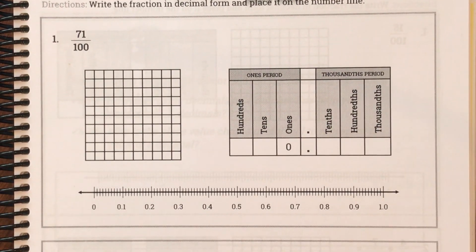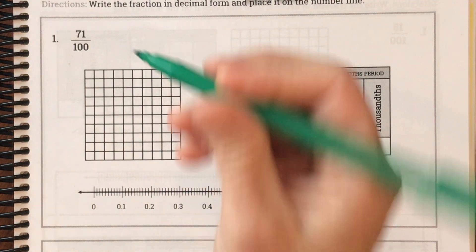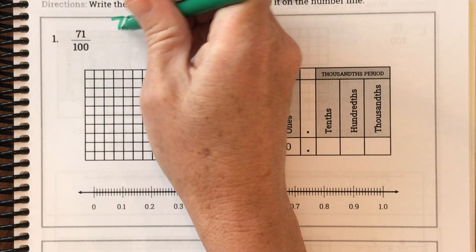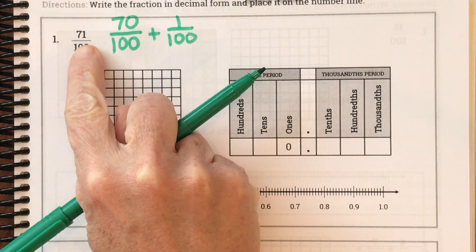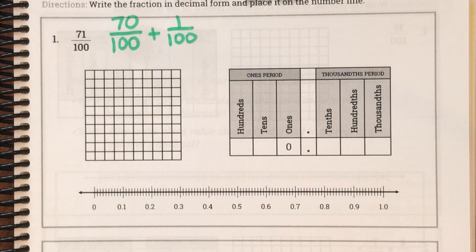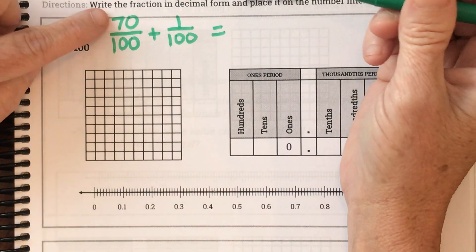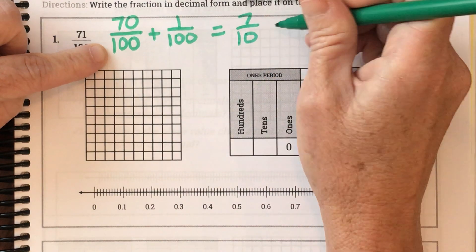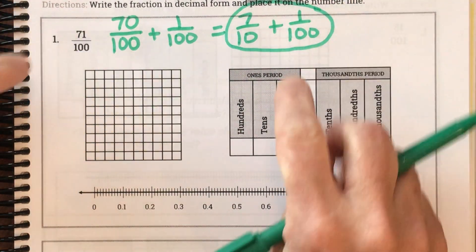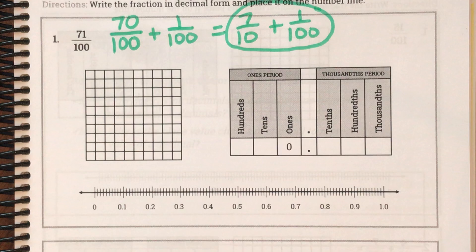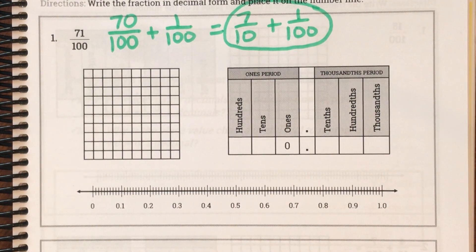Let's try some of these together. We are on page 238. The first problem says: write the fraction in decimal form and place it on the number line. What do we know about seventy-one hundredths? Let's decompose that into seventy hundredths plus one hundredth. Then we can change seventy hundredths into seven tenths, giving us seven tenths plus one hundredth — that's what step one wants us to do.